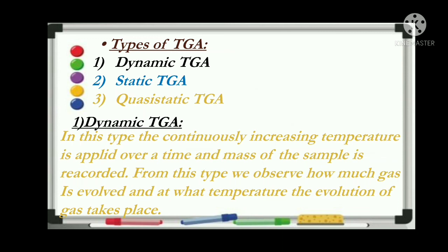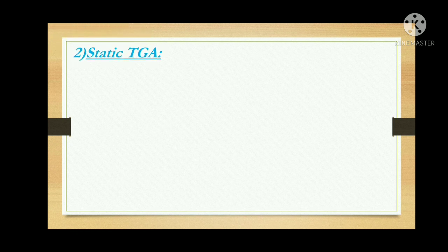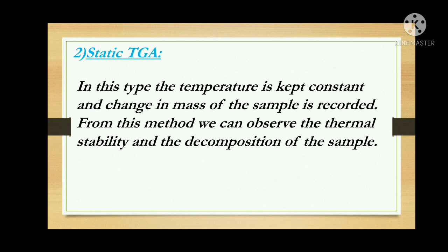The second type is static TGA. In this method, we heat the given sample at constant temperature and the change in mass of the sample is recorded. From this method we can observe the thermal stability and decomposition of the sample. Thermal stability means there is no change in weight of the sample — either decrease or increase in weight — at that constant temperature.